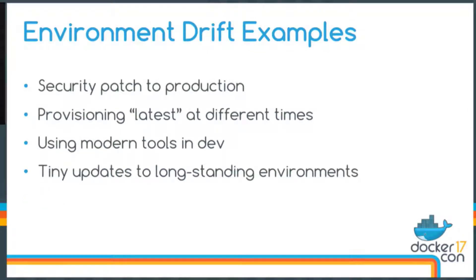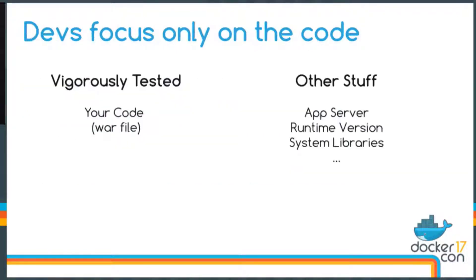If these dependencies are consistent across your environments, you're good to go. But there are a lot of different reasons for environmental drift. Security patches are a good example. Provisioning environments at different times is another. Long-standing environments have a particular problem because they accumulate lots of small updates over time. As developers, it's really easy to blame the system administrator — surely it's their fault that our money-stealing application isn't working in production. But is there something we can do as developers to prevent this?